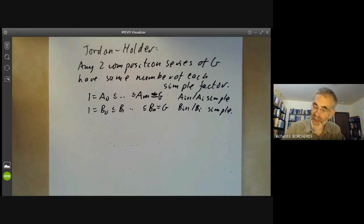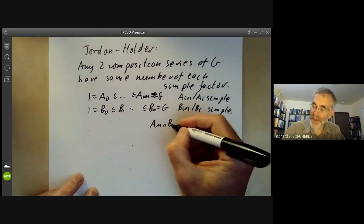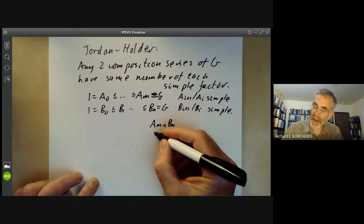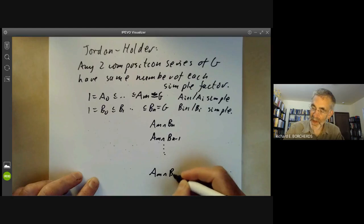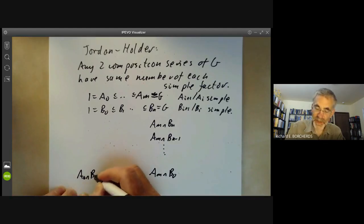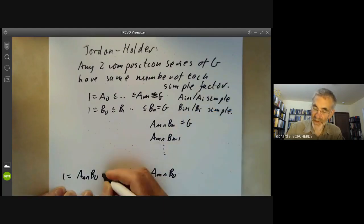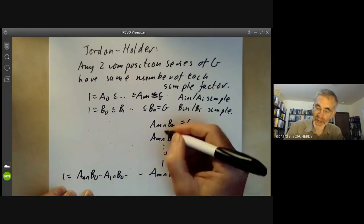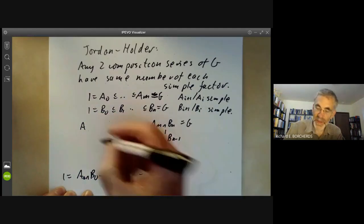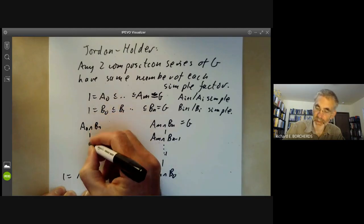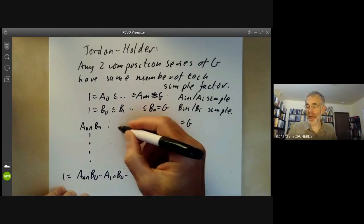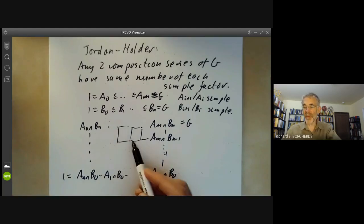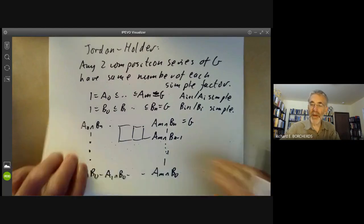So what we do is we form this big array. We take AM intersection BN, which is just equal to G. And then we have AM intersection BN minus 1, go all the way down to AM intersect B0. And then we have AM intersect B0 here. This is just one, of course, and this is just the whole group G. And then we have AM intersect B0 and so on. So we have this sort of two-dimensional array of groups. Where have I got to? This should be A0 intersect BN. And we notice that each of these groups is a normal subgroup of the two groups above it.